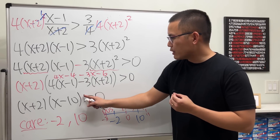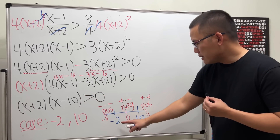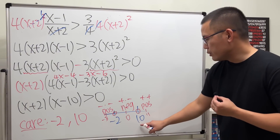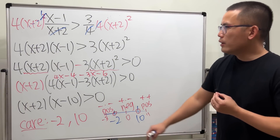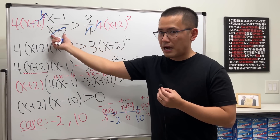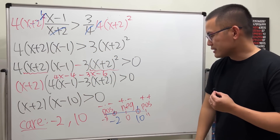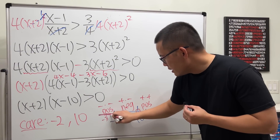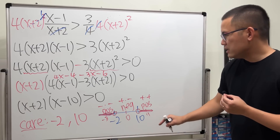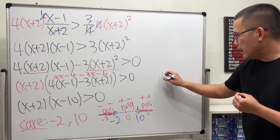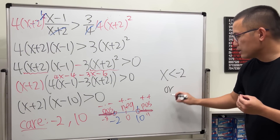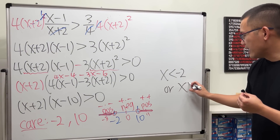Since we need the expression to be greater than zero, we want the positive intervals. We do not include negative 2 or 10 as endpoints. We also exclude negative 2 because x plus 2 was originally in the denominator. So the full solution is x less than negative 2, or x greater than 10.